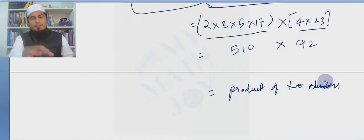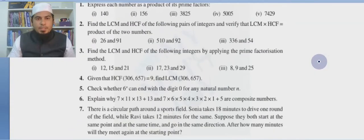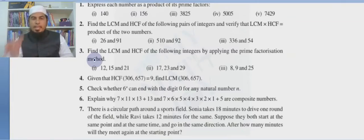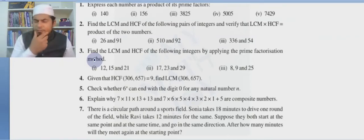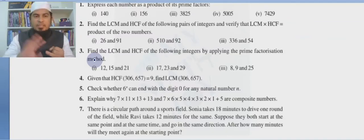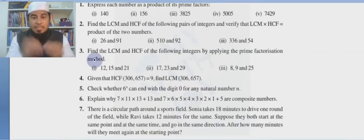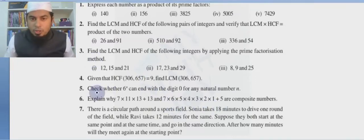We have found HCF and LCM by prime factorization and verified that HCF times LCM equals the product of the two numbers. Now let us proceed to the third part. In the third bit, three numbers are given. We can find HCF and LCM of three numbers, but note carefully: HCF times LCM is NOT equal to the product of three numbers. The fundamental theorem states HCF times LCM equals the product of two numbers only.